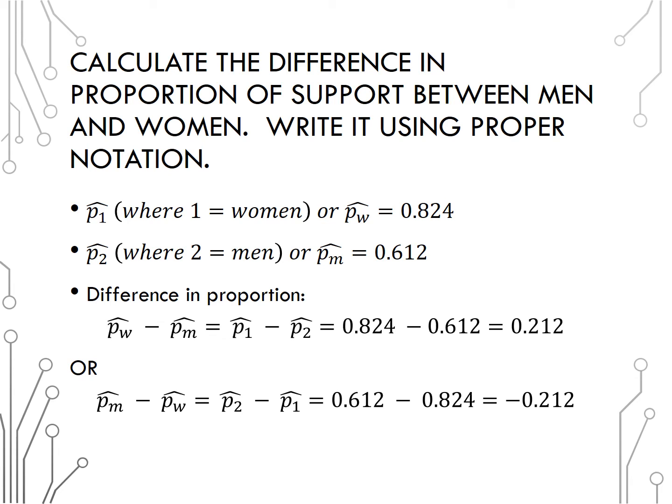How would you interpret the difference in proportion? The proportion of women who support this gun control law is 0.212 higher than men, or the proportion of men who support this gun control law is 0.212 lower than women.